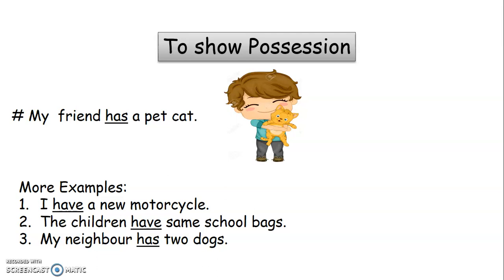Third, 'My neighbour has two dogs.' 'Neighbour' is a singular noun, so we make use of the verb 'has'. Has shows what the neighbour possesses, that is two dogs.